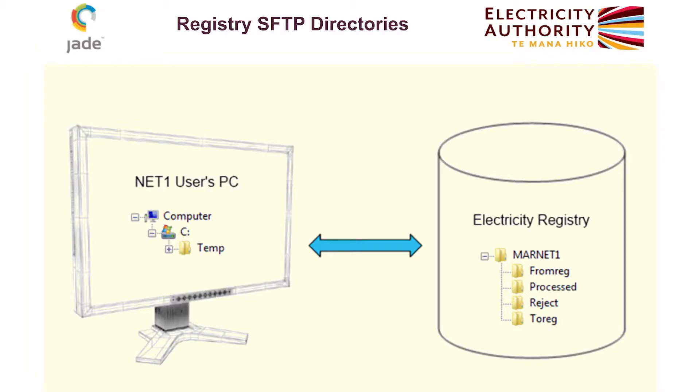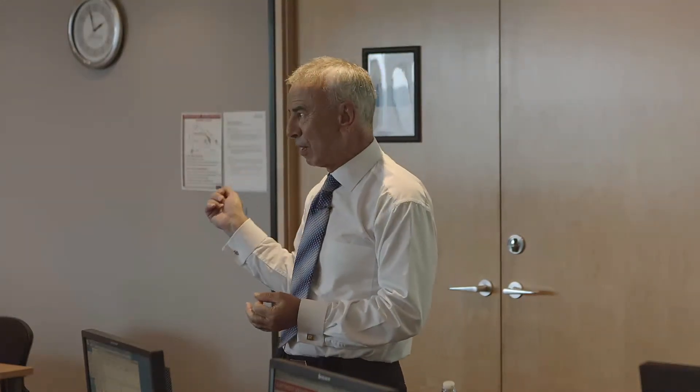Underneath MARNET1 there are four important subdirectories: from reg, to reg, reject, and processed. The to reg directory is where you want to send files — any file you send to the registry goes into to reg. There's a background process constantly monitoring the to reg directories, picking up files and attempting to process them. If processed successfully, they end up in the processed directory; if something is wrong with the file, they end up in the reject directory.